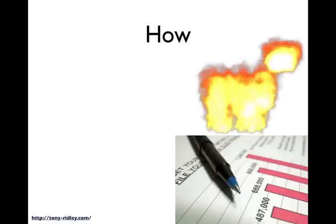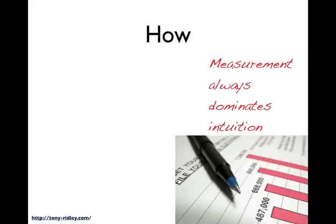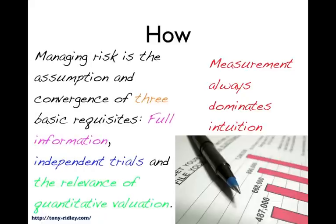So how do we go about this? First and foremost — and I know this is going to enrage and excite a number of people — measurement always dominates intuition. The reality is it has to be a numerical-based system. There are a number of ways of distilling and capturing the information, but it has to be numerically based. It has to have content so we can understand the scale of magnitude and a comparative scale, and numbers simply do this much better than word pictures. Managing risk is the assumption and convergence of three basic requisites: full information, independent trials, and the relevance of quantitative valuation.